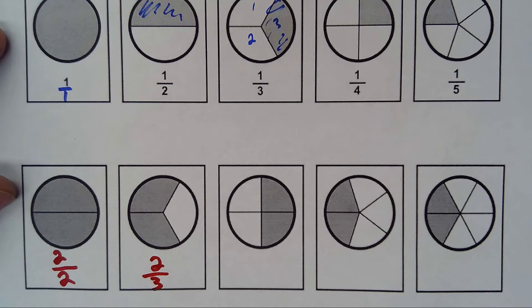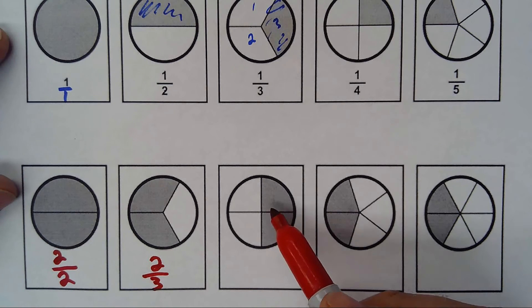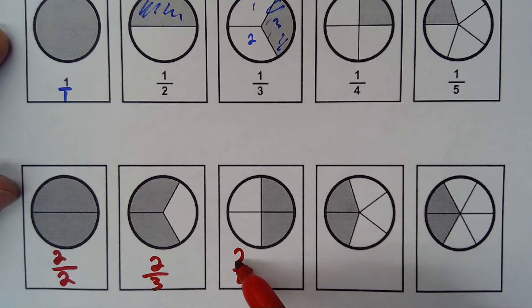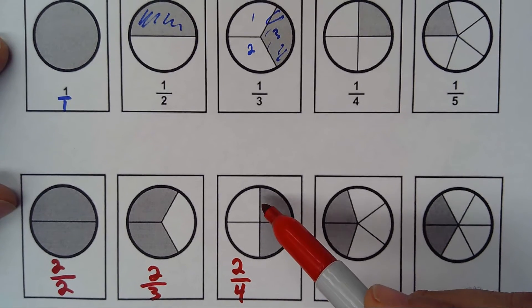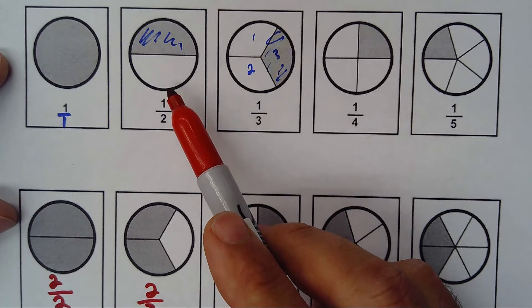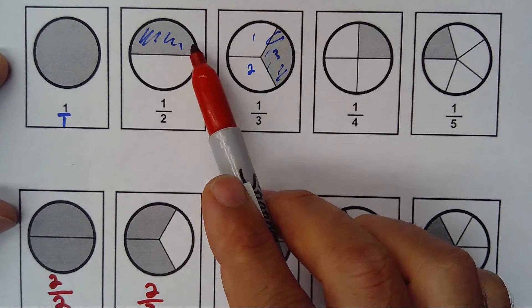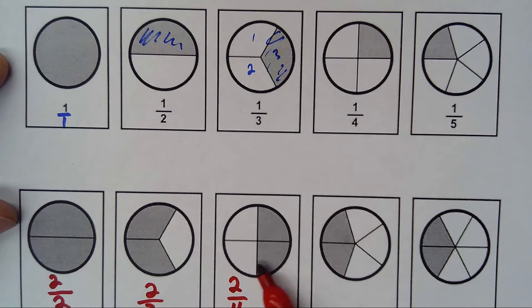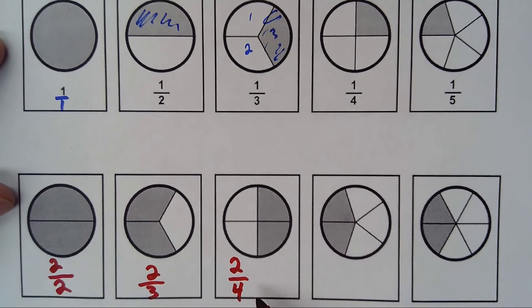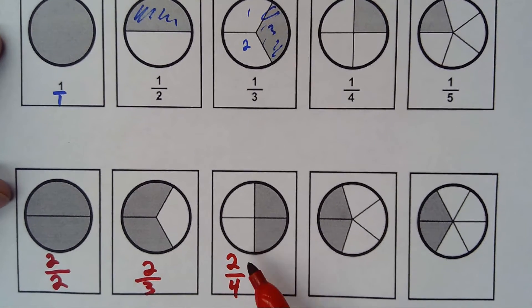This one is from 4 parts — I select 2, so it's 2 over 4. Notice that 2 over 4 matches one half, because this is half of the whole and this is also half of the whole. In one case it's divided into 2 pieces and I take one; in the other it's divided into 4 pieces and I take two.